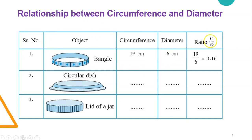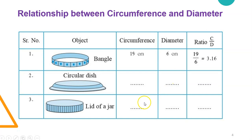So circumference is shown by C, diameter is shown by D. I divide circumference by diameter and I get the answer 3.16. You can take any circular dish — it has to be a perfect circle — or a lid of a jar, and measure its circumference and diameter, then divide and see what answer you get.